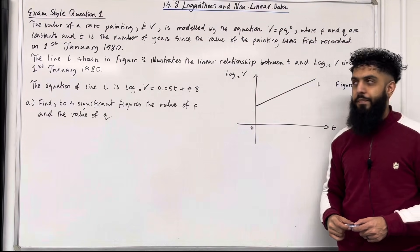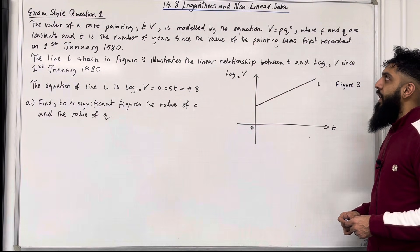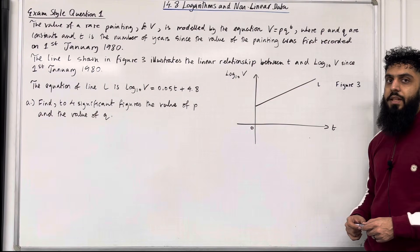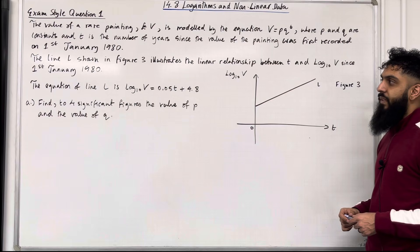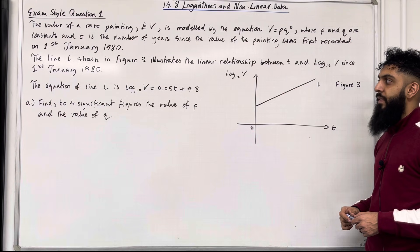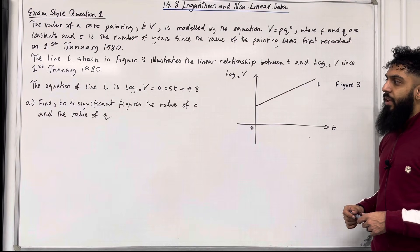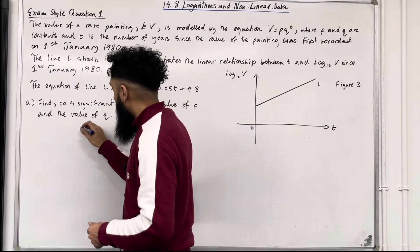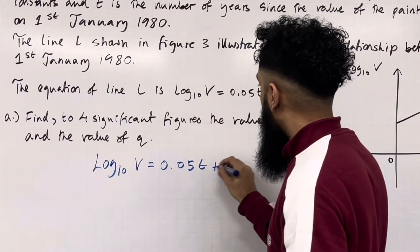Let's look at exam style question 1. The value of a rare painting v pounds is modelled by the equation v equals pq to the power t, where p and q are constants and t is the number of years since the value was first recorded on 1st January 1980. The equation of line L is log base 10 of v equals 0.05t plus 4.8. Part A: find to four significant figures the value of p and the value of q.